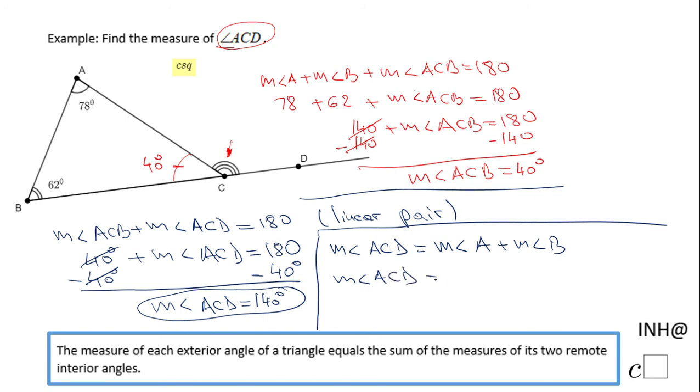And we end up with the same value as in the previous method, 140 degrees. As you notice, this method is a lot easier. So if you know this theorem, it's very useful. If you enjoyed the video, don't forget to click the like button and come back to C Square for more help. Thank you.